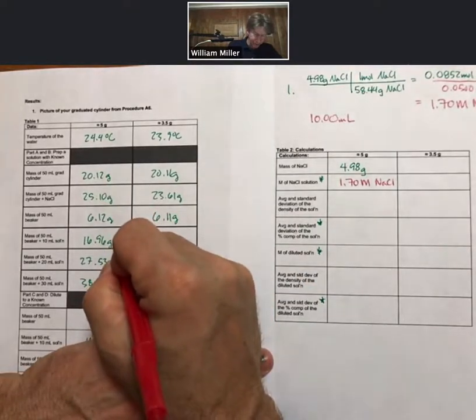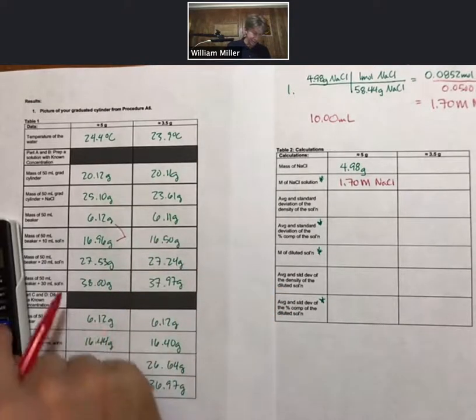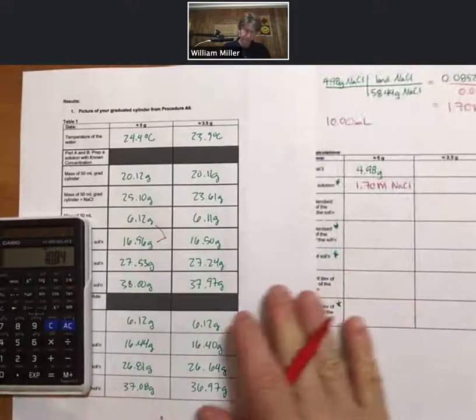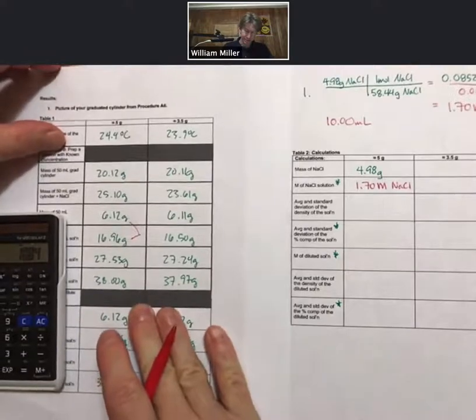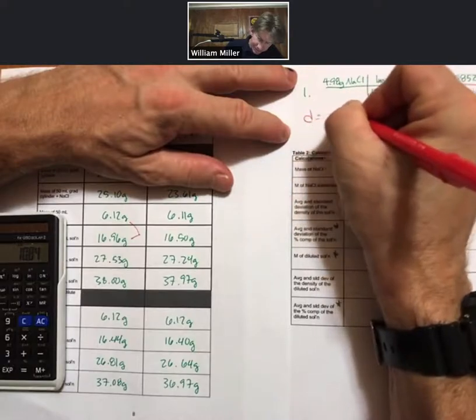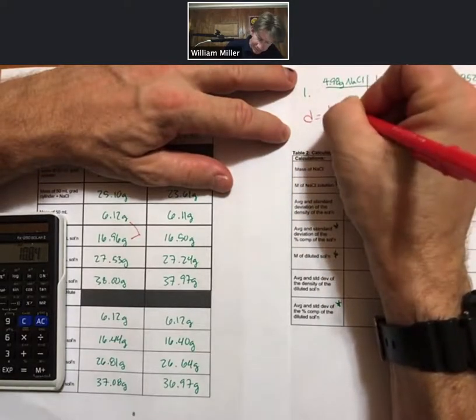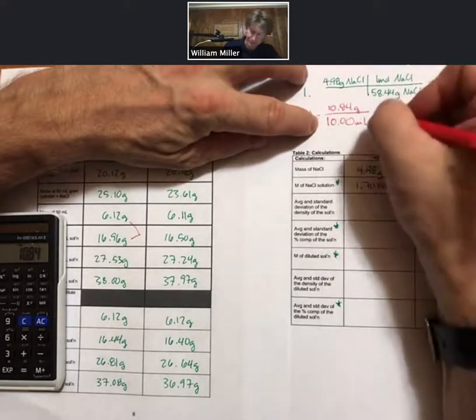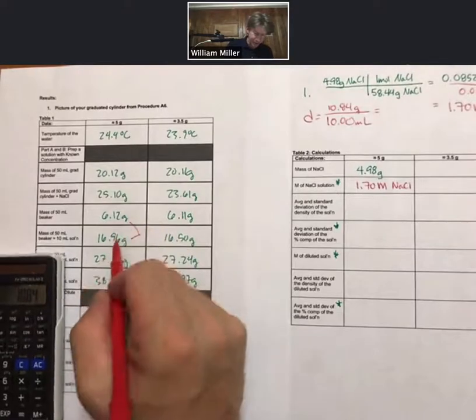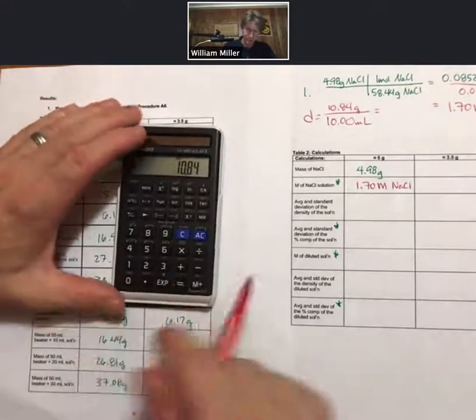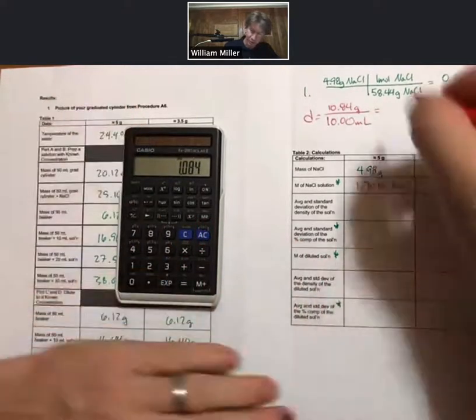So 16.96 minus 6.12. And I get 10.84 grams. And so the density is going to be grams of solution over milliliters of solution. And for this first case, my first sample here, it's going to be 10.84 divided by 10 for 1.084.